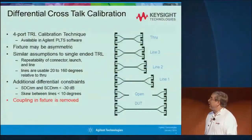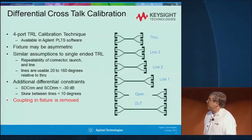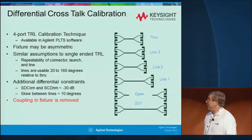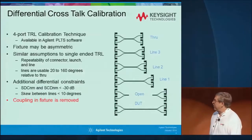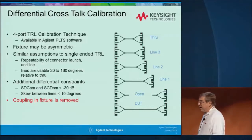A few years ago, we came up with another TRL calibration technique, which is a four-port TRL. It looks very similar — you have a through, multiple lines, a reflect of some kind. Same constraints: assuming the lines are the same, connector repeatability, and so on. The additional assumptions are that the mode conversion is less than 30 dB and the skew between the lines is less than 10 degrees. And in this case, you'll get the fixture removed, which includes coupling. So if you have coupling in this area, it will remove that. We have some people that started to do differential TRL in the signal integrity world.